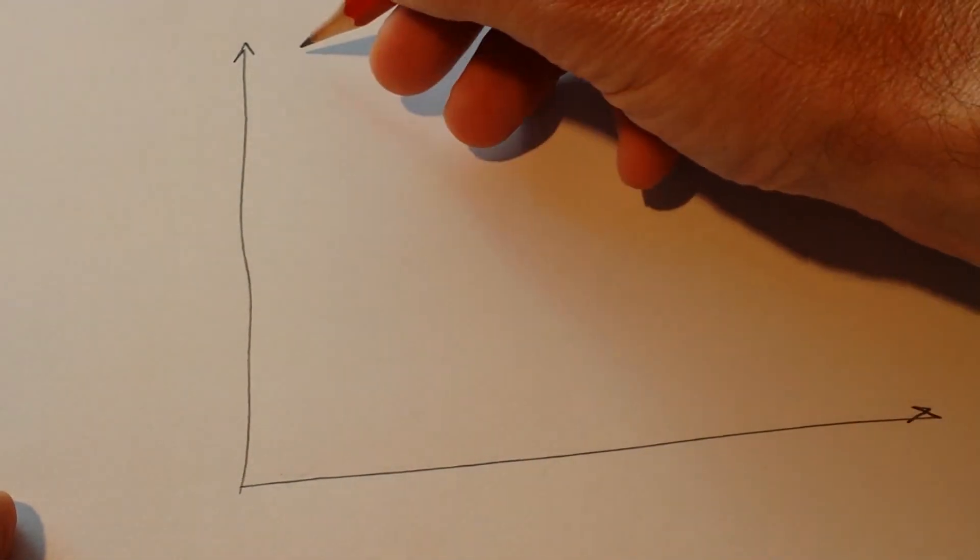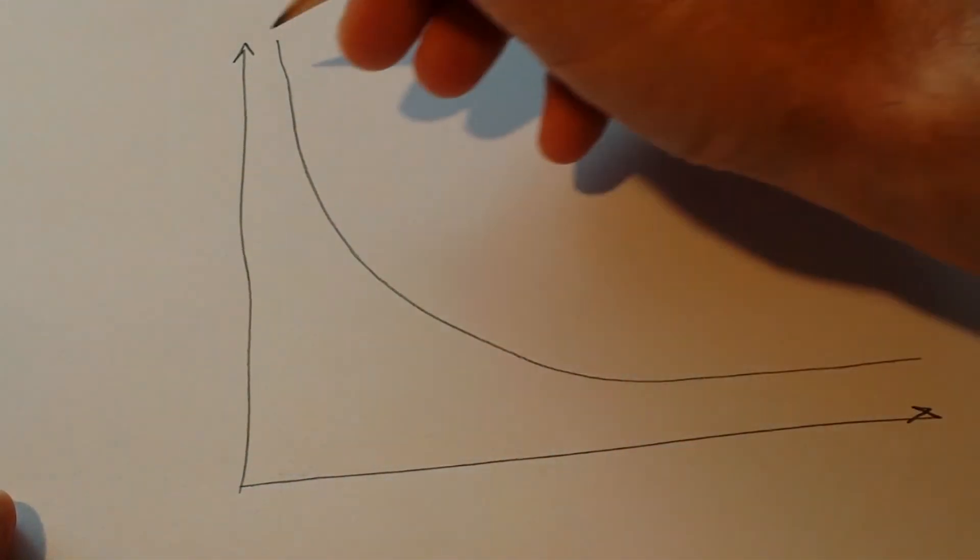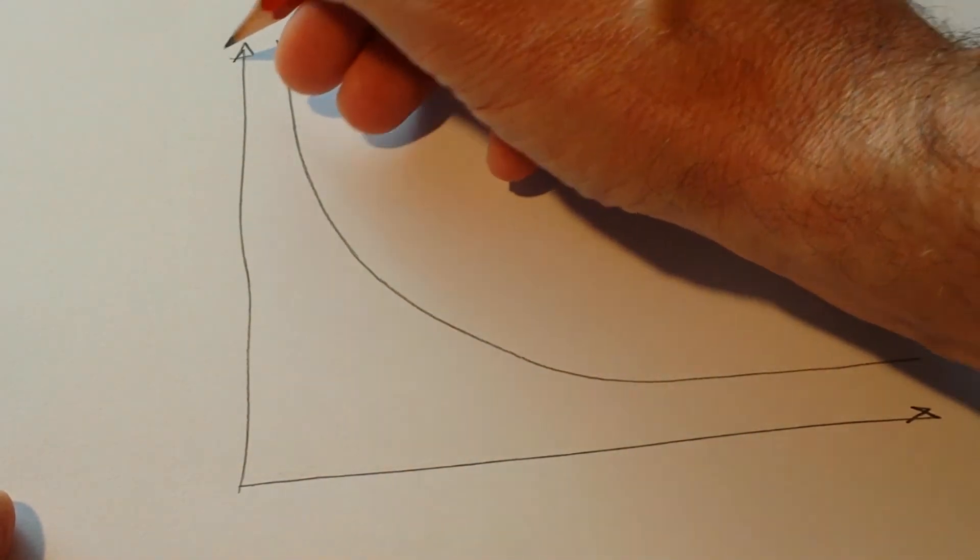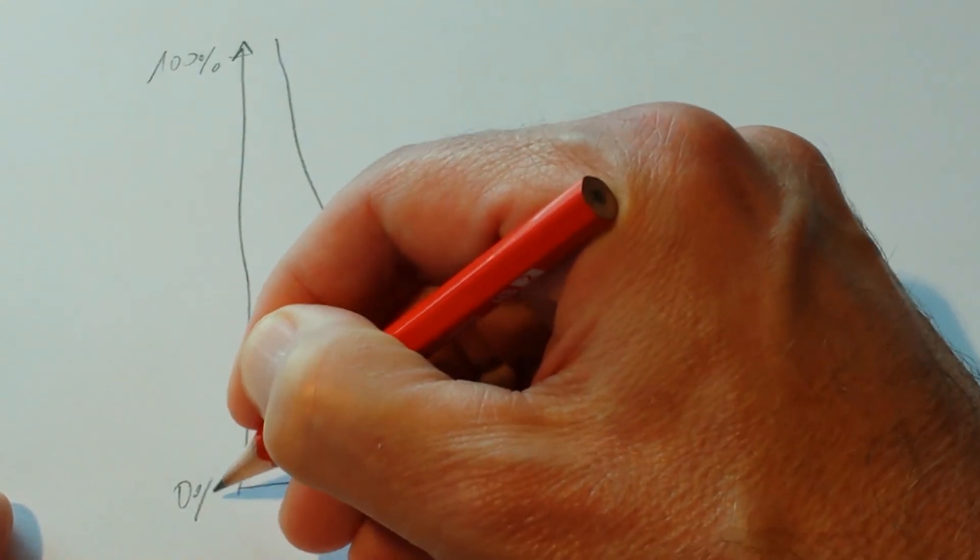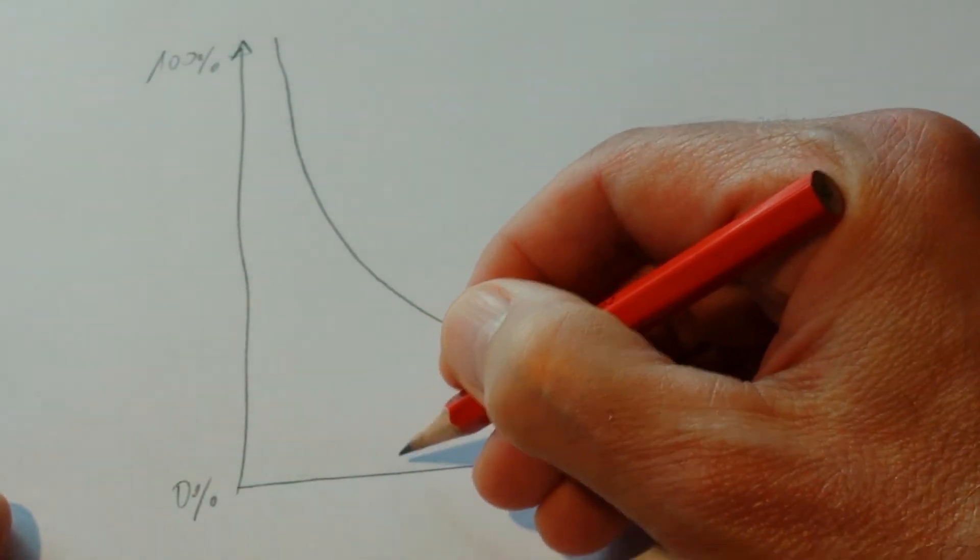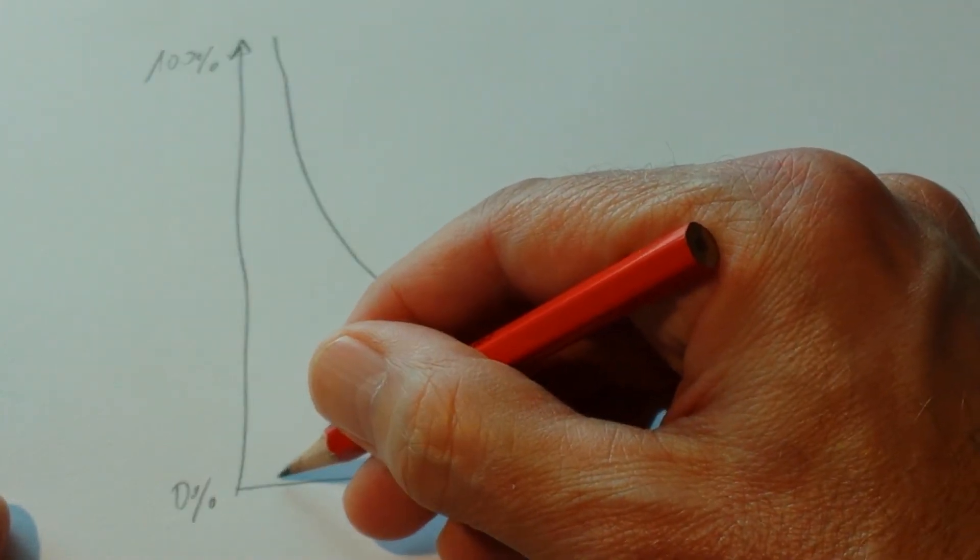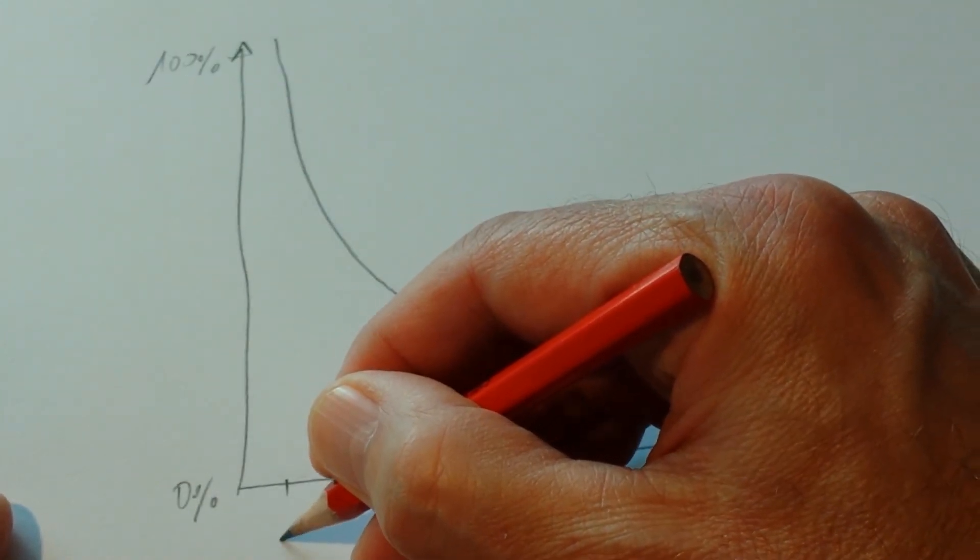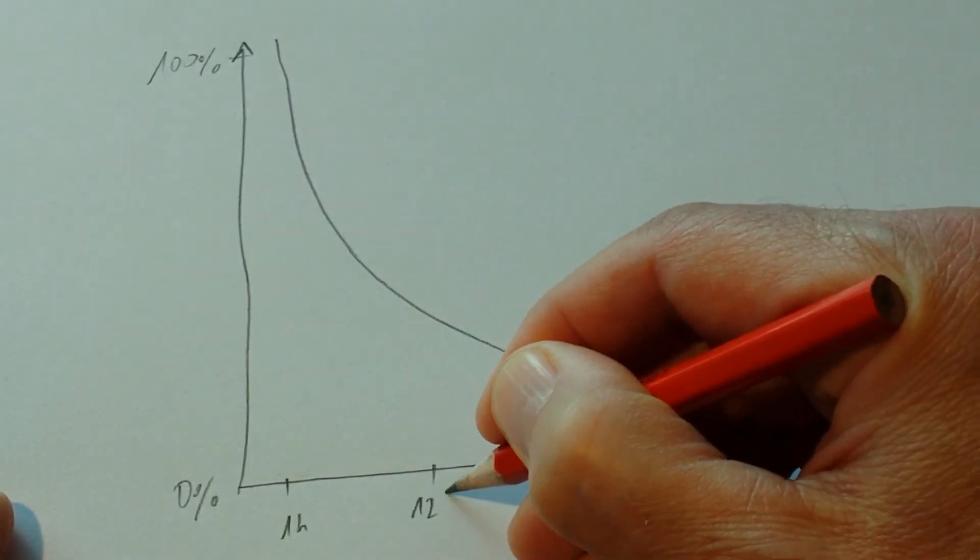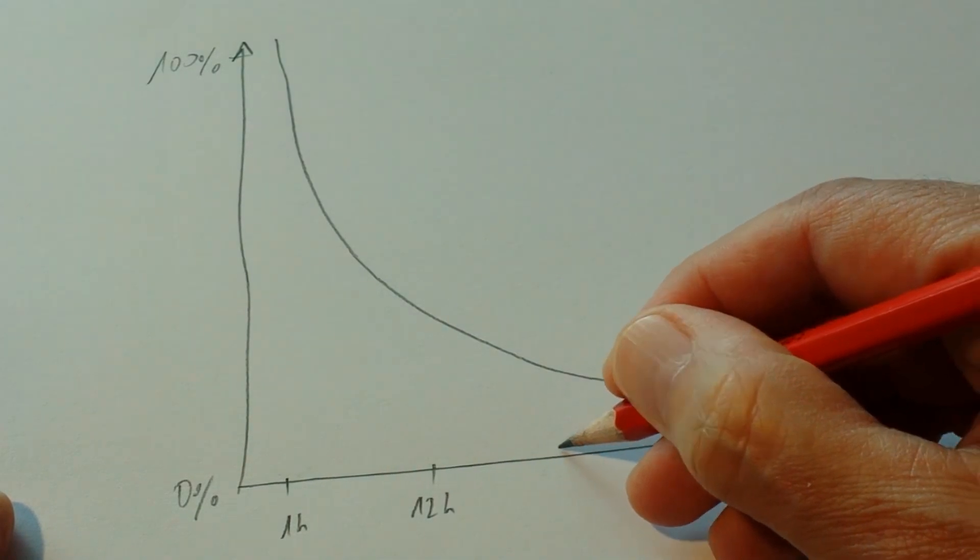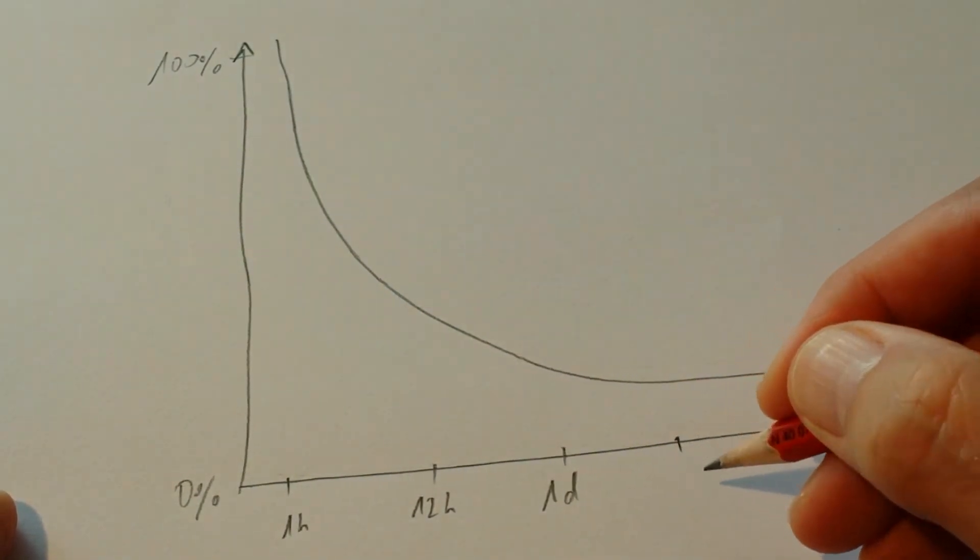So in the beginning, we have learned all and we forget fast. But then the curve flattens out. In the beginning, we remember 100% and then it goes down. As we can see, early on, after one hour, we haven't forgotten much. And after 12 hours, we have forgotten quite a bit. And then after one day, depending on the materials, we have forgotten a lot.